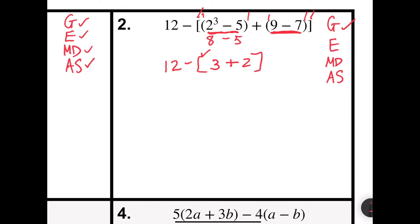I still have a grouping symbol with the brackets. 3 plus 2 is 5. So I will have 12 minus 5, which is 7.